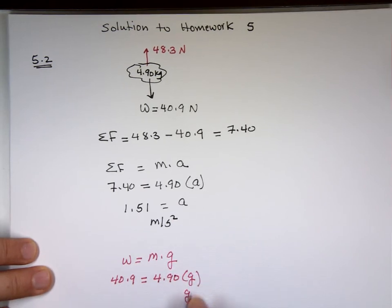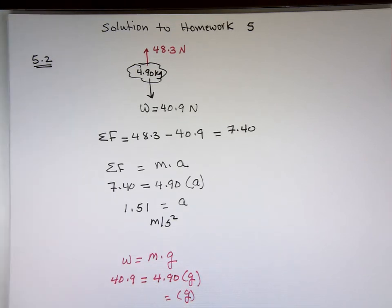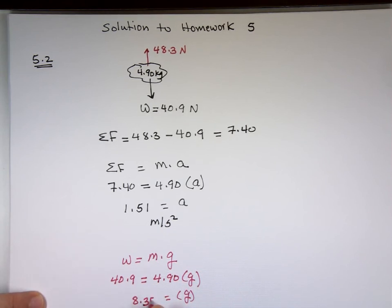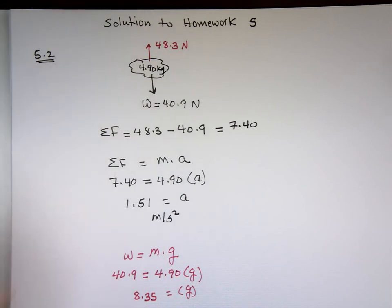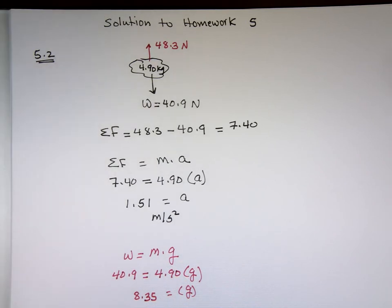So if I need to know what is the gravity on this planet, it's going to be 40.9 divided by 4.90. It's 8.35. That's gravity on that planet. They're not asking for it, but I'm just curious about it.